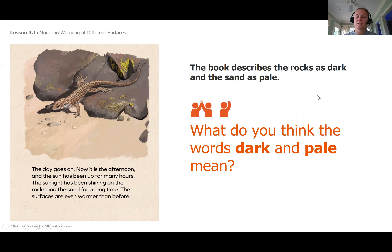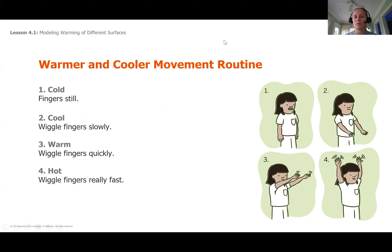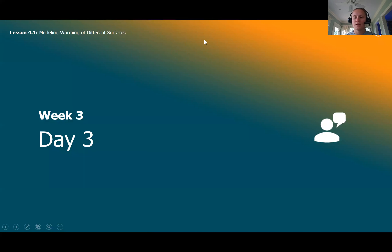The book described the rocks as dark and the sand as pale. What do you think the words dark and pale mean? Dark is closer to black than white, and pale is closer to white than black. So if I were looking at this page, this lighter color is pale and this darker color with the words is dark. If you'd like, you can do a warmer and cooler movement routine - when it's cold your fingers are still, when it's cool they wiggle a little, when it's warm they wiggle faster, and when it's hot they wiggle really really fast. Now we're on to day three.